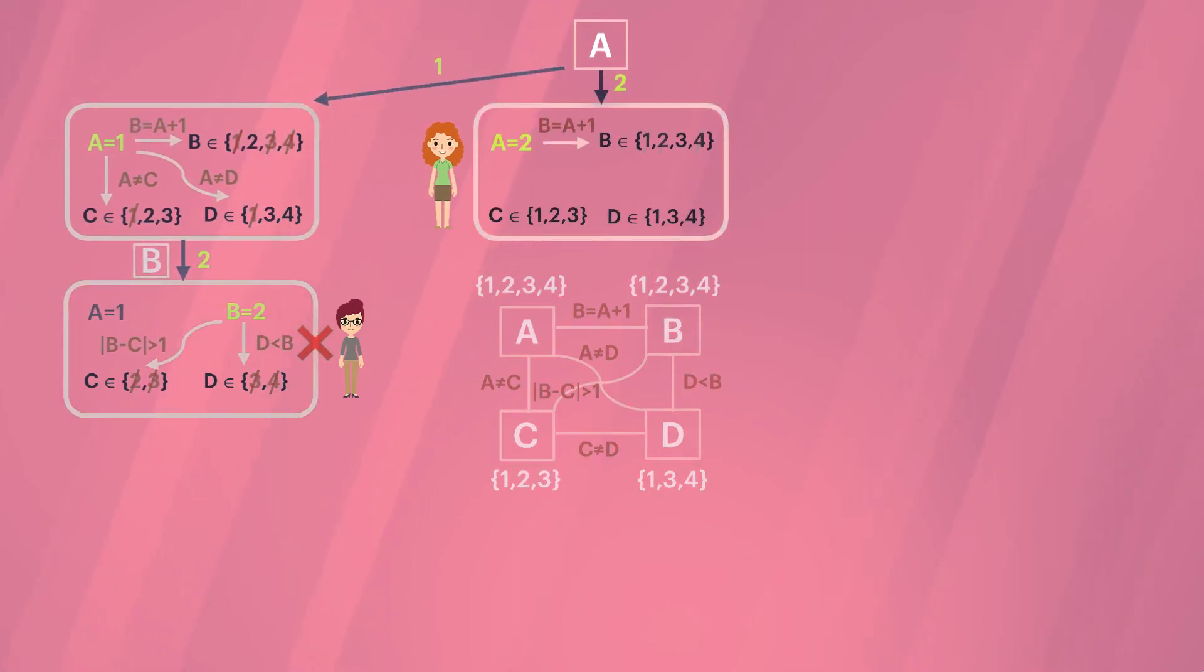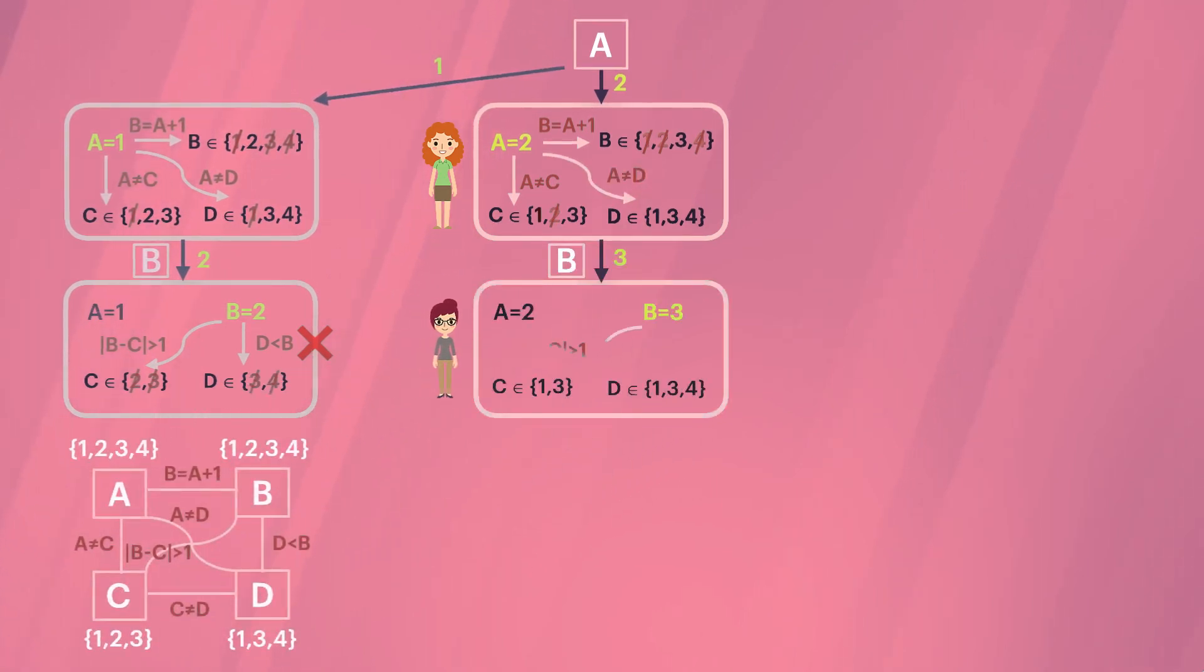For A equals 2, we repeat the same forward checking. B has only one choice again, and this time we can try C. But this leaves no choice for D. Another failure.